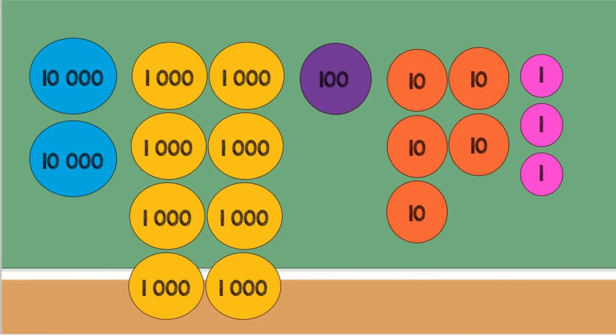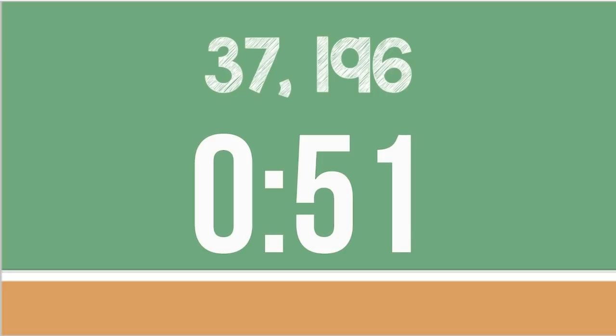Time's up, and the answer is shown — are you correct? Great! Next: 37,196. Timer starts now. Draw circles with the numbers inside. Count them all to make 37,196. Take your time, do not rush.